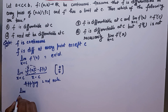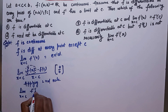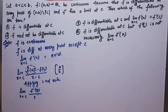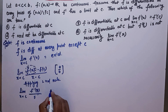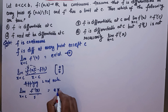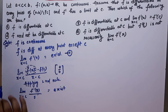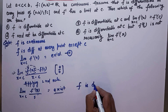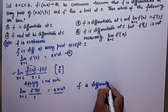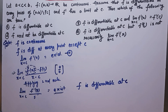Now applying L'Hôpital's rule — because it is of the form 0 over 0 — what you will get is F dash x over 1. You already know that this limit will actually exist from the given condition. So I have started with the differentiability limit and proved it will exist using L'Hôpital's rule. Therefore, the function F is differentiable at C.